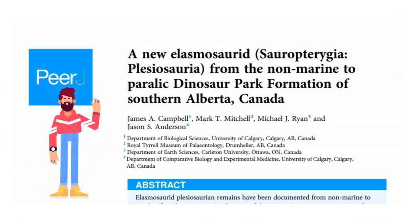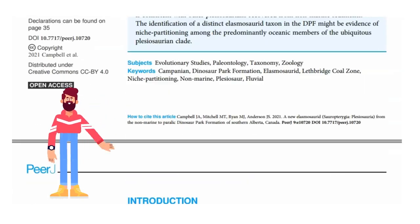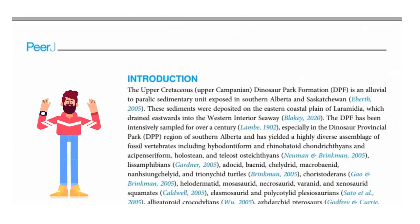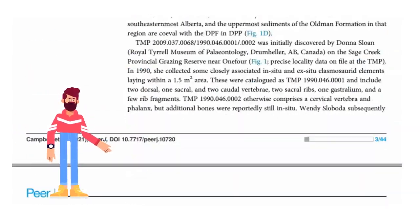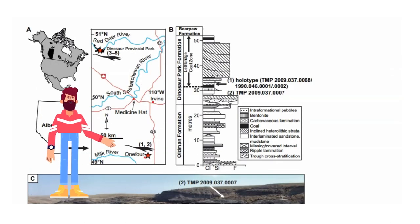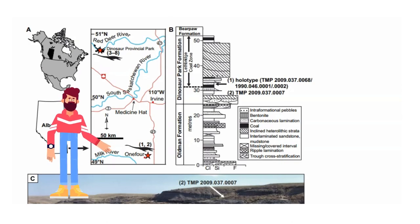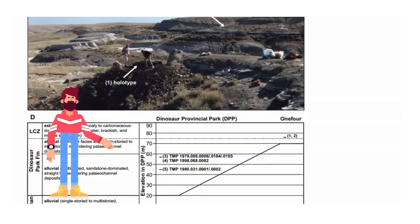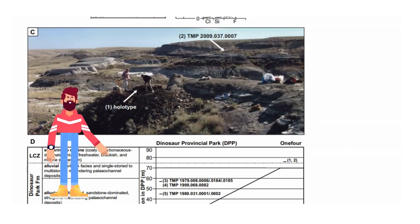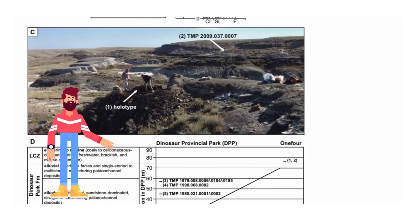The Upper Cretaceous Dinosaur Park Formation is an alluvial to Parallic Sedimentary Unit exposed in southern Alberta and Saskatchewan. These sediments were deposited on the eastern coastal plain of Laramidia, which drained eastwards into the Western Interior Seaway. The Dinosaur Park Formation has been intensively sampled for over a century, especially in the Dinosaur Provincial Park region of southern Alberta, and has yielded a highly diverse assemblage of fossil vertebrates.